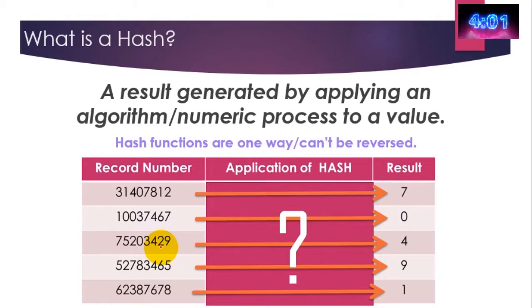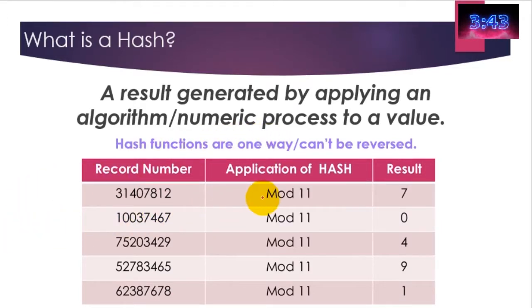What actually happens in a hash is simply that the value of a hash, this one here, is taken, put through the process, and it generates zero, just like this number down here generates a nine. So let's have a look at how this actually works. In this instance, the hash function that's being used is called mod or modulo, and we're going to be using the modulo 11 hashing function.